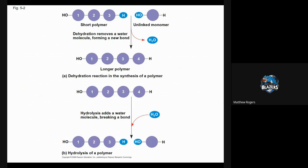Here are the two classic diagrams. In a dehydration reaction, we have a short polymer and a monomer we want to add to it. The polymer has an H functional group at its end, and the monomer has an OH functional group. When we combine them, those groups form H2O, which leaves, and the two pieces connect together. This is dehydration synthesis — the synthesis of polymers.